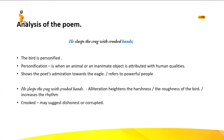Here there is another technique used by the poet — alliteration. The repetition of the 'k' sound in 'clasps,' 'crag' and 'crooked' helps to heighten the harshness, the roughness, the coarseness of the bird, while also increasing the rhythm of the phrase.